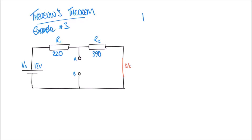The Thevenin voltage, which I'll call VTH(A) — just because I'm only dealing with the left-hand power supply — is equal to the supply voltage 12, multiplied by a fraction. On the top of that fraction, I put whichever resistor I'm measuring across, which is R2. We can see that we're measuring across R2, so 390 goes on the top. On the bottom, both resistors added together: 220 plus 390. If I calculate that, I get an answer of 7.67 volts.